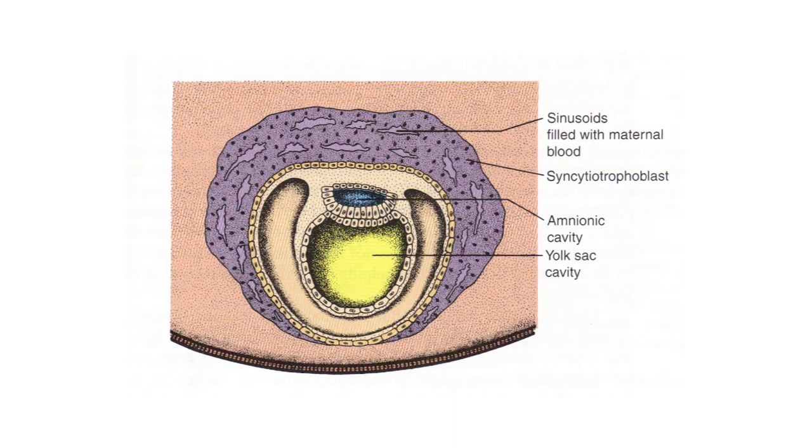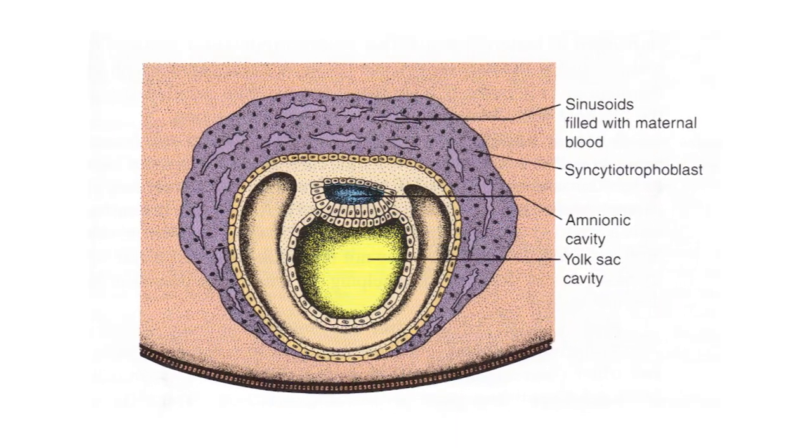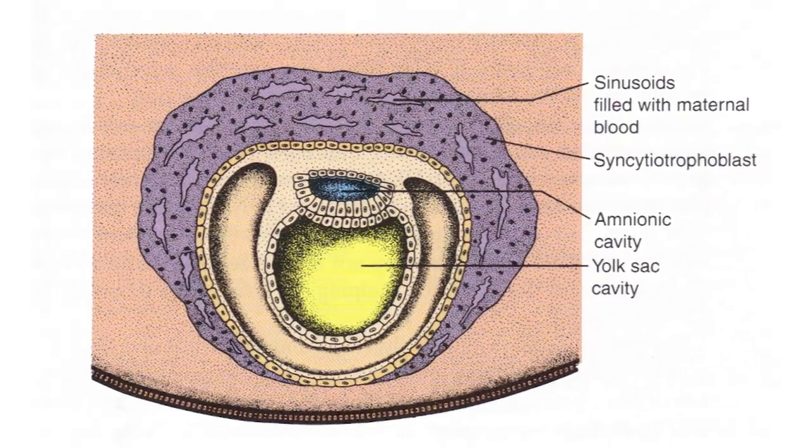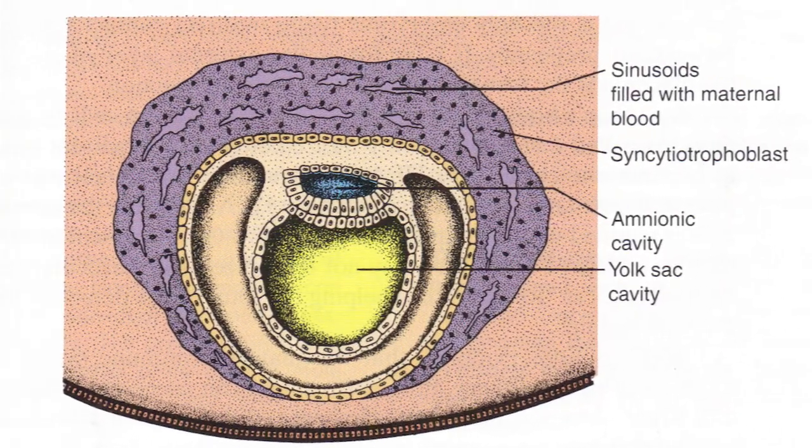In animals other than mammals this is also called the blastula stage. The trophoblast secretes fluid into the blastocyst. The inner cell mass will give rise to the embryo proper, the amnion, the yolk sac, and the allantois. The outer trophoblast layer will form the fetal part of the placenta.